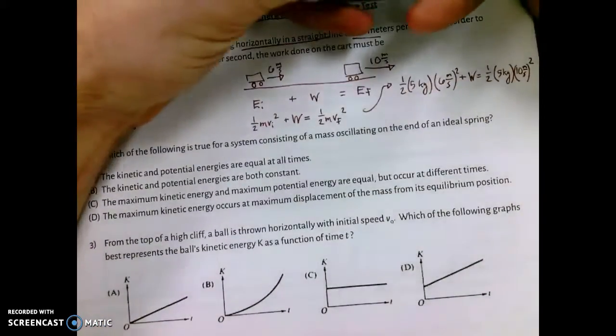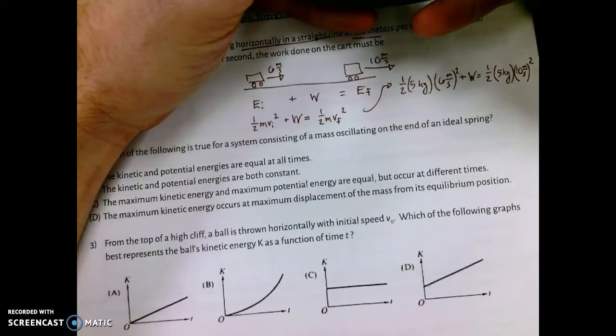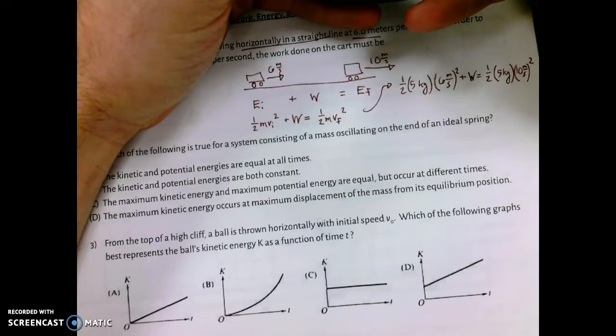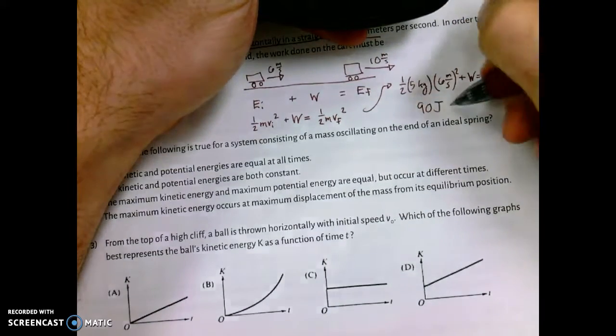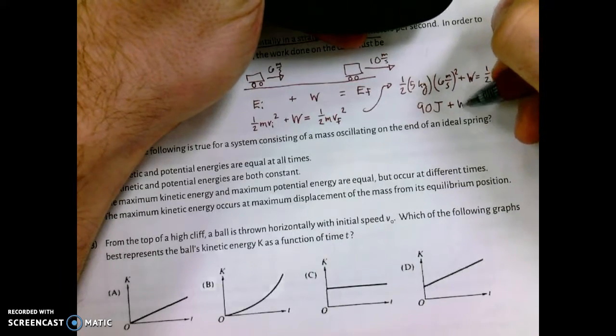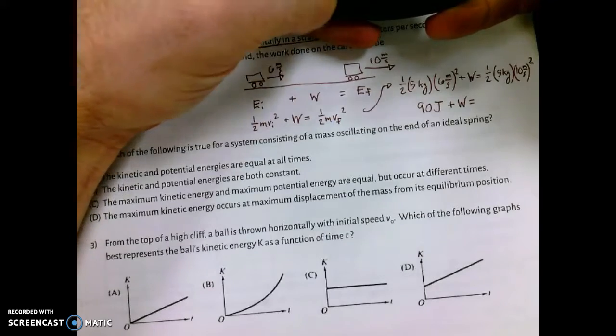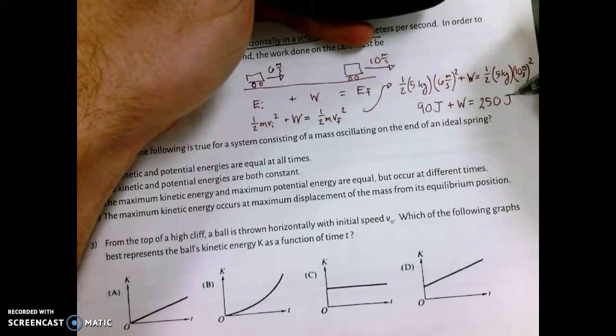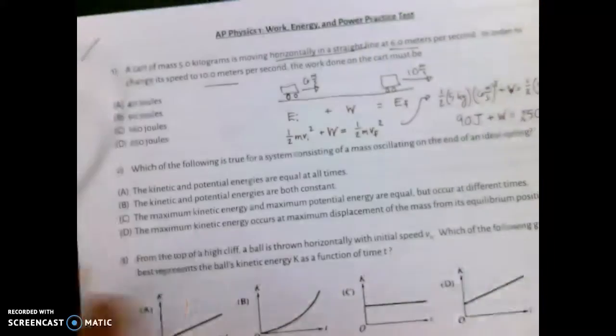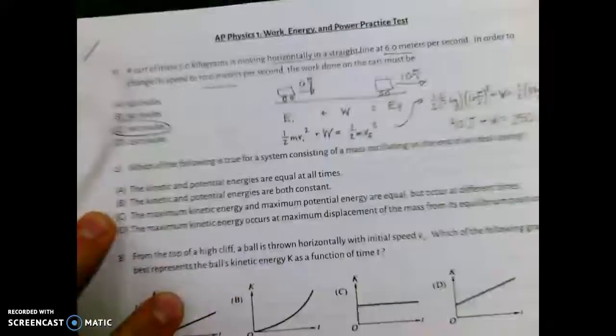That's 0.5 times 5 times 6 squared, which is 90 joules initially, plus work equals one-half times 5 times 100, which is 250 joules. That means the work done has to be 160 joules.